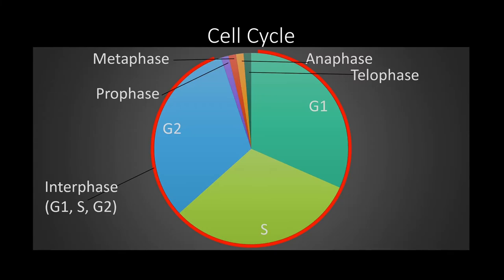The cell cycle can be divided into two main phases: interphase and mitosis. Interphase can be further subdivided into G1 phase, S phase, and G2 phase.